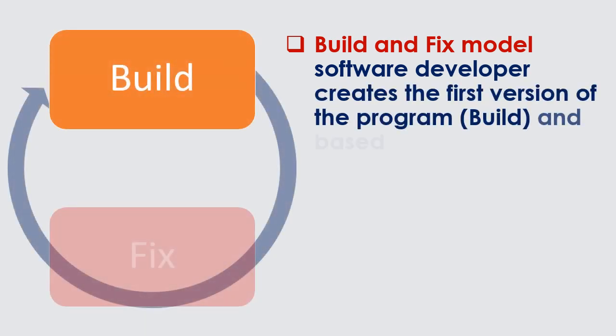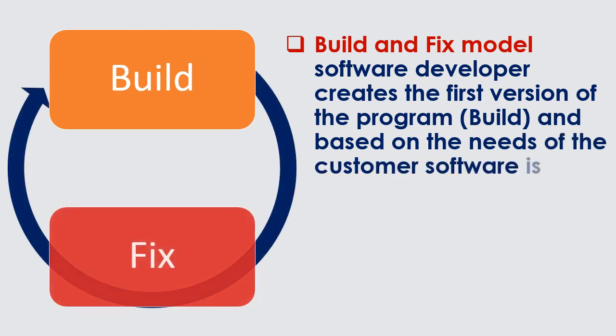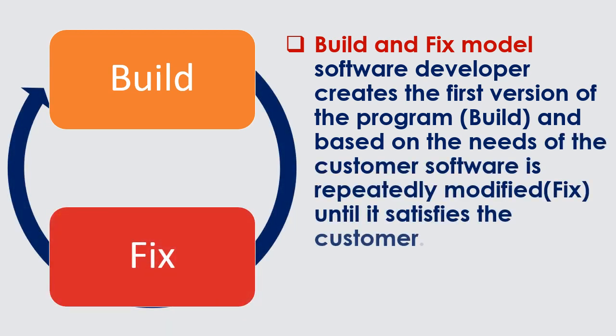Build and Fix Model: A software developer creates the first version of the program — build — and based on the needs of the customer, the software is repeatedly modified — fix — until it satisfies the customer.